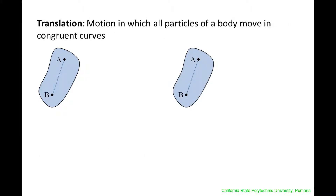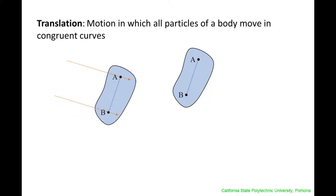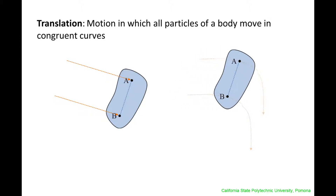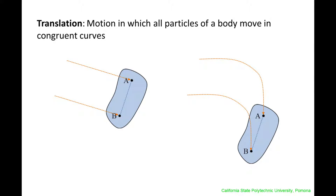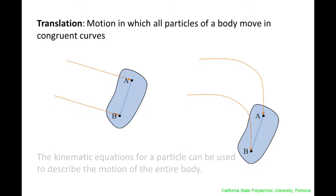Translation is motion in which all particles of a body move in congruent curves. The body may move in a straight line or move in a curved path. For this type of motion, the kinematic equations developed for a single particle can be used to describe the motion of the entire rigid body, since all particles in the body move at the same velocity and acceleration.